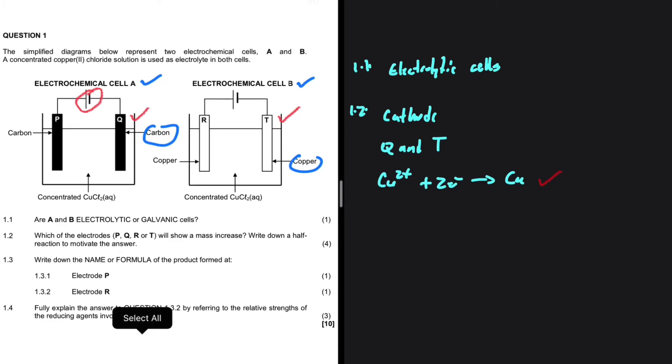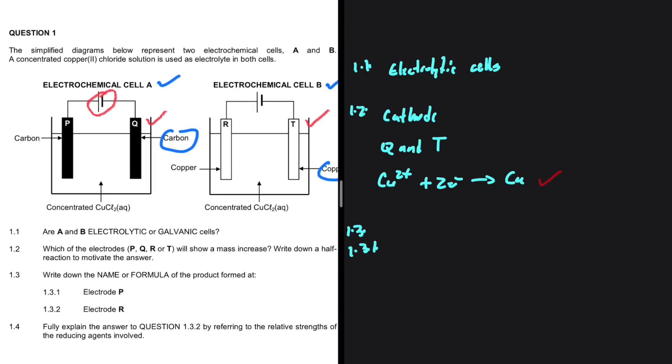Let's go to 1.3. So in 1.3, we're supposed to write down the name or formula of the product formed at electrode P. So let's go ahead and take a look at electrode P.